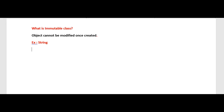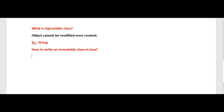Now we'll see how to write an immutable class in Java — we can call these a set of rules. The state of immutable objects cannot be modified after construction, meaning any modification should result in a new immutable object. We have a few rules to write an immutable class in Java.